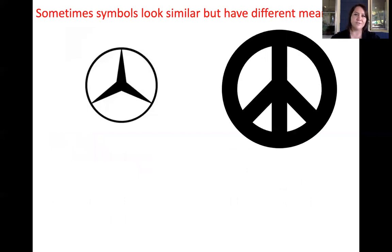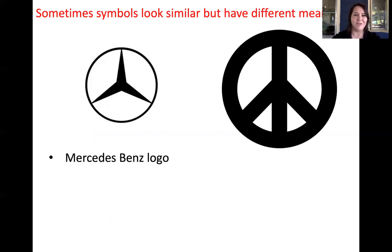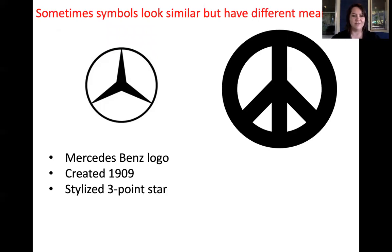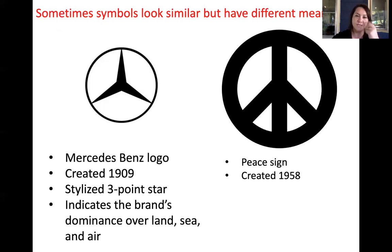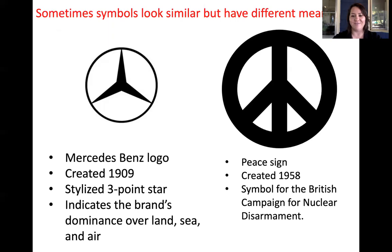Sometimes symbols look similar but have different meanings. Depending on the time period or culture in which you're viewing them, the meanings would be different. We've got the Mercedes-Benz logo on the left, and the peace sign, created in 1958. When putting this lecture together, I was surprised to learn that the Mercedes logo is actually quite a bit older than the peace sign. The peace sign initially was a British symbol for nuclear disarmament.